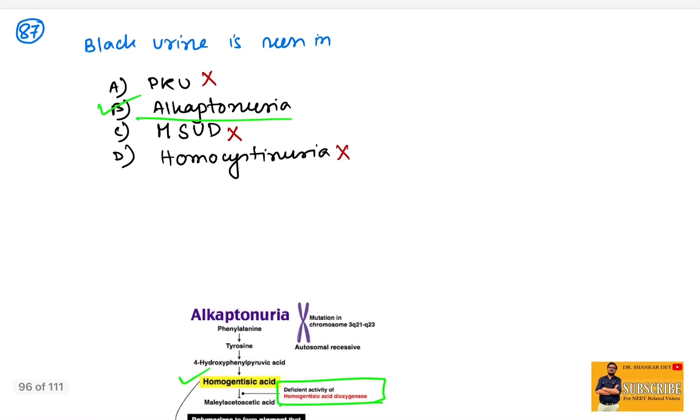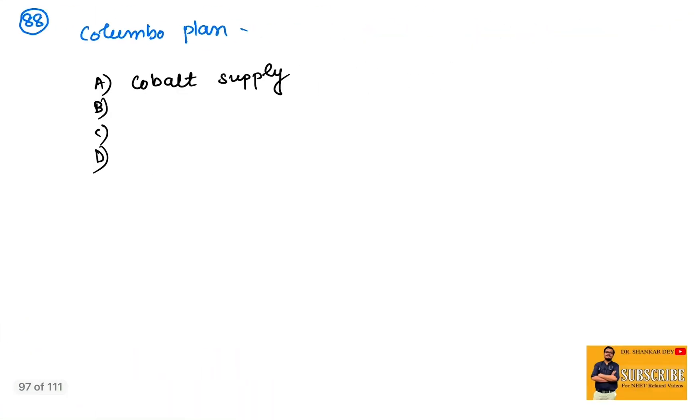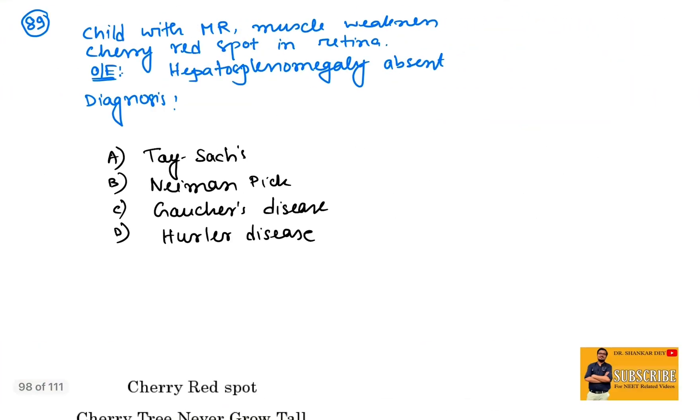Coming to question number 88: Colombo plan. This was a new type of question, absolutely new question. This was about cobalt supply.